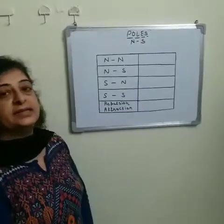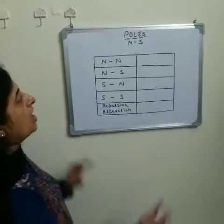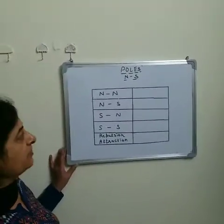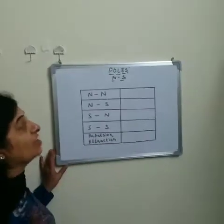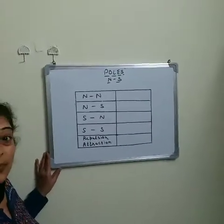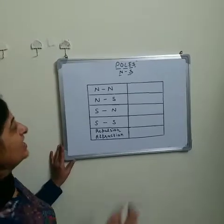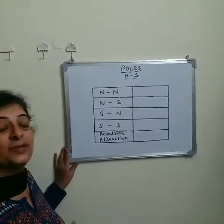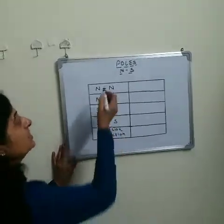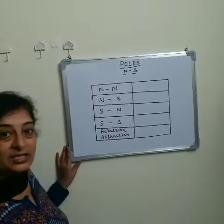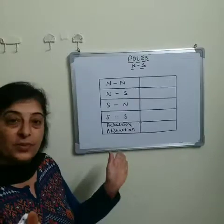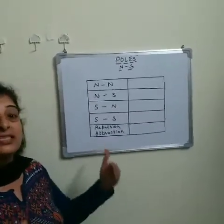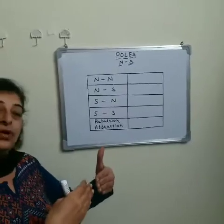There are two poles of a magnet — north pole and south pole. The same poles repel each other and different poles attract each other. That is a property of a magnet. Same poles move apart from each other, and different poles come together.